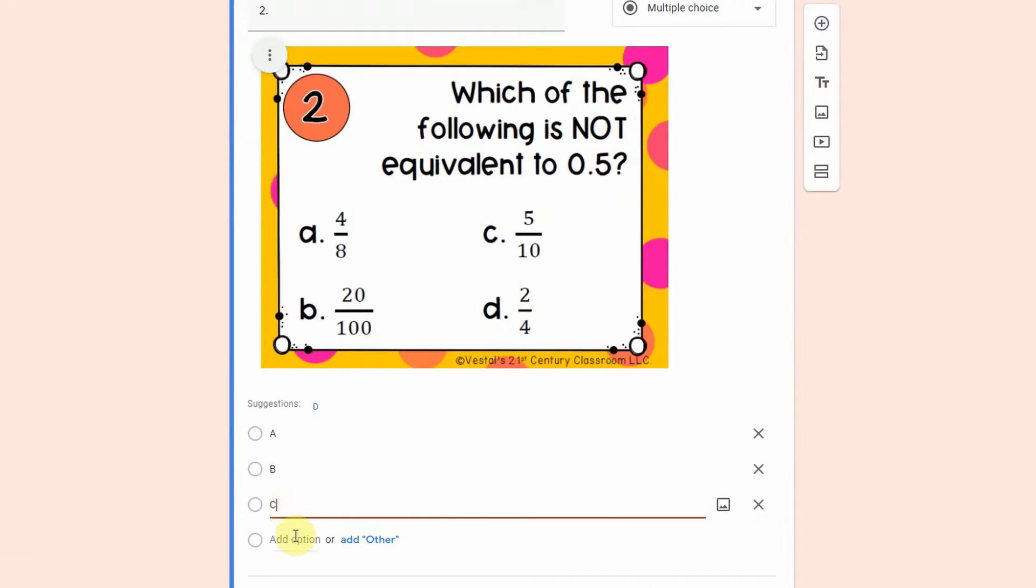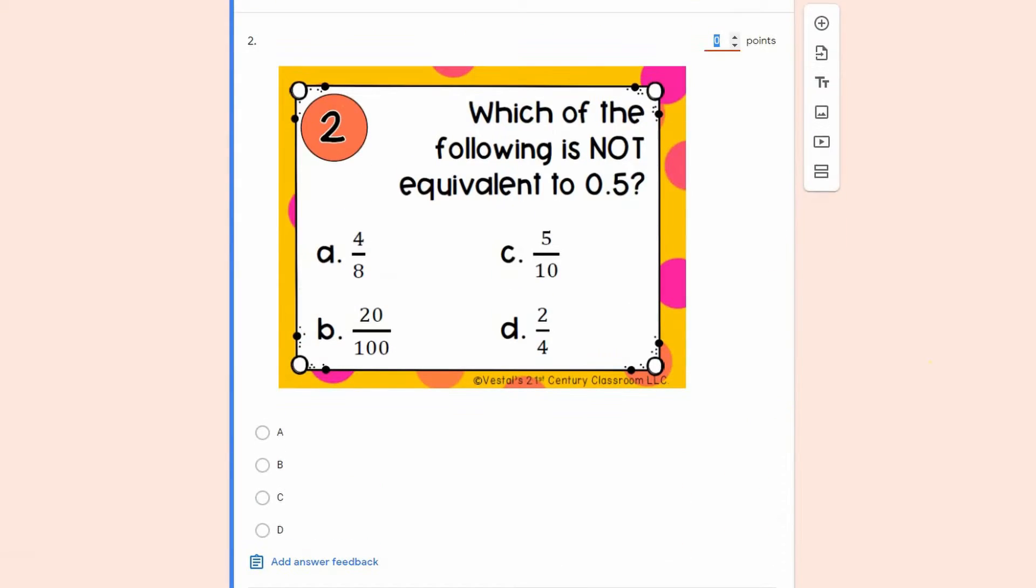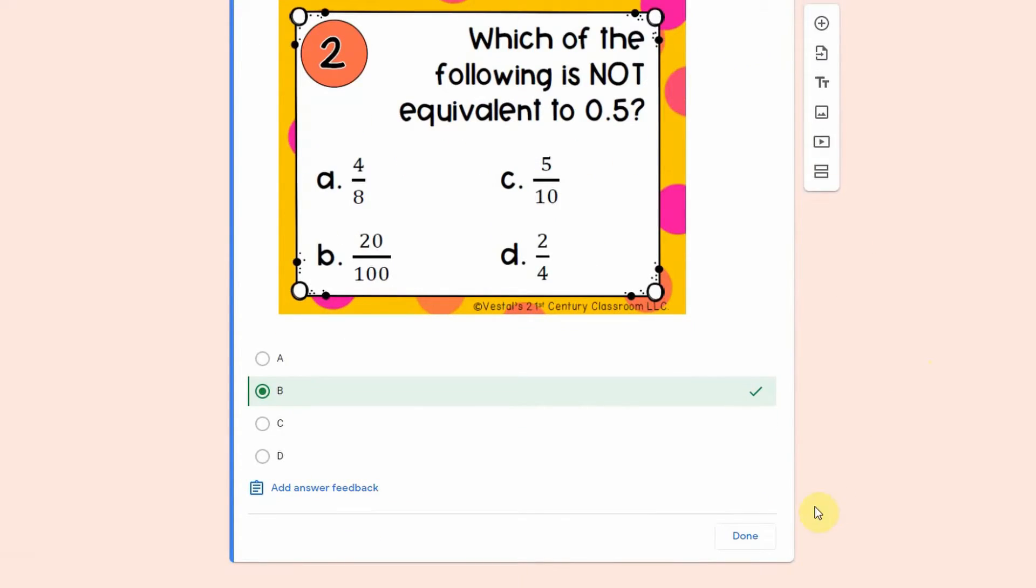I'm going to click required so that students have to answer it. And this is a multiple choice so we're just going to type A. We can also type the responses if we don't want to add all. And then I'm going to click on the answer key, I'm going to make it worth one point and B is the correct answer so I'm going to select that.